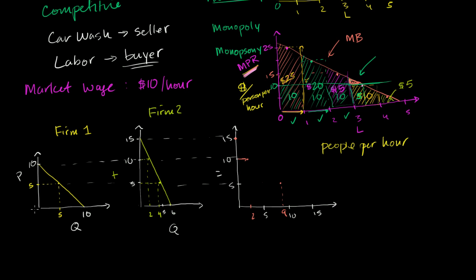And then at a price of 0, if labor is free, this firm would demand 10 units, and this firm would demand 6 units. If you add them together, you'd get 16 units. So you'd get 16 units.